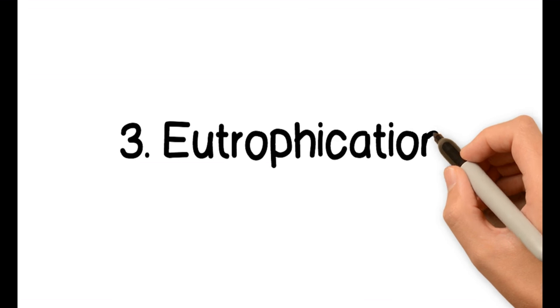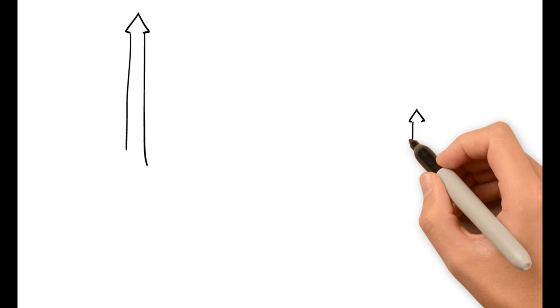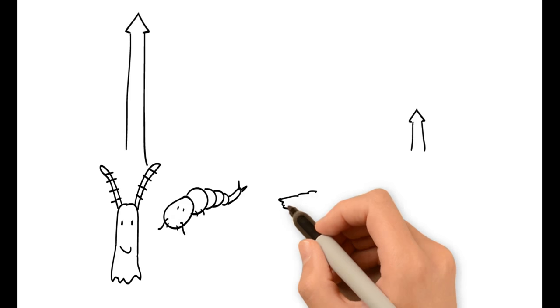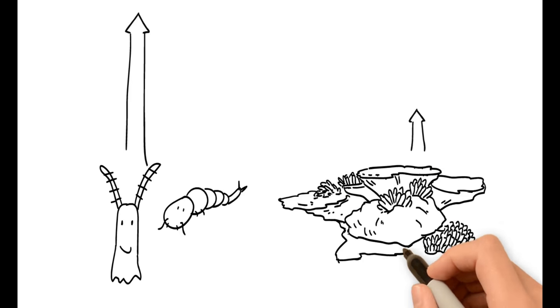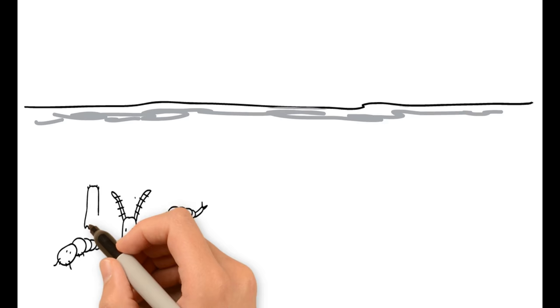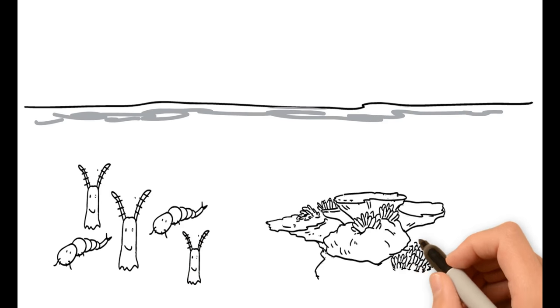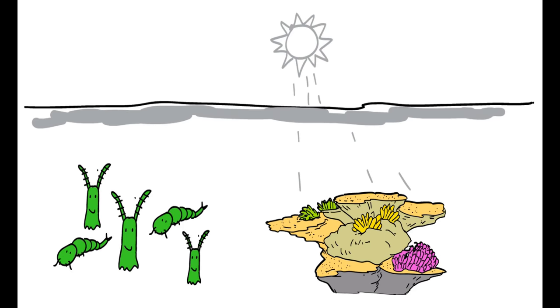3. Eutrophication. Eutrophication causes a balance shift in the species living in a certain area. Fast-growing plankton grow faster than corals. The increase in plankton causes the waters to get murkier, which results in plants getting less sunlight, reducing the amount of photosynthesis.